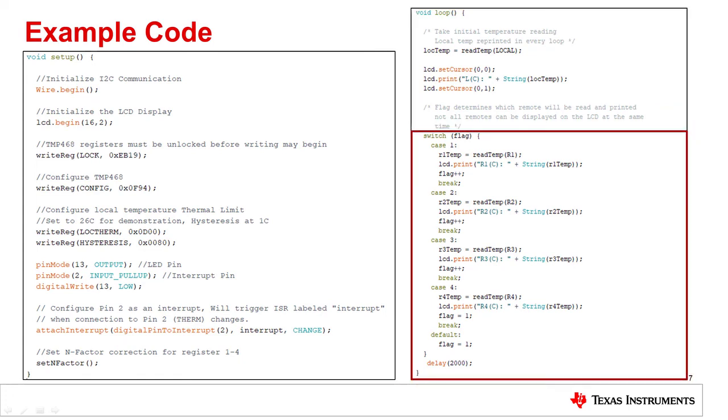An integer flag is used to tell the program which remote temperature it needs to print. This switch statement will read and print the appropriate temperature and update the flag accordingly. At the end of each loop, a 2 second delay is inserted to allow for readability.